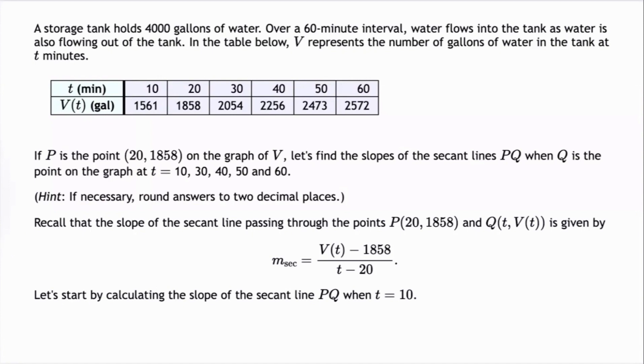Recall that the slope of the secant line passing through the points P(20, 1858) and Q(t, V(t)) is given by M_sec = (V(t) - 1858) / (t - 20).